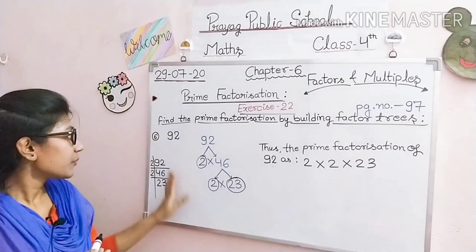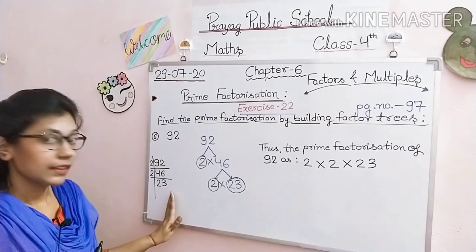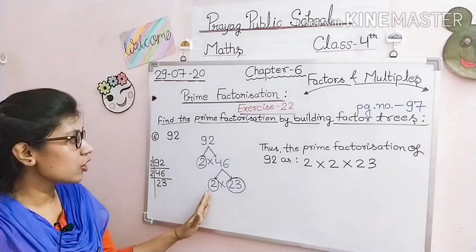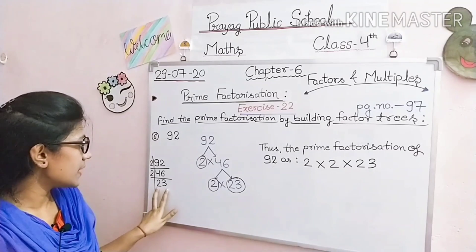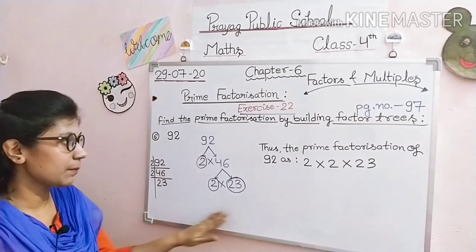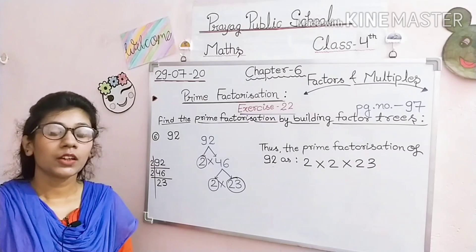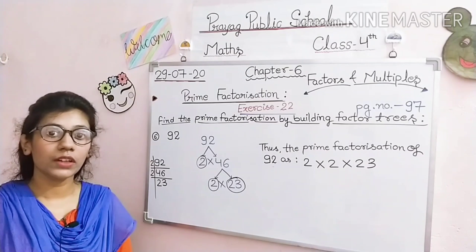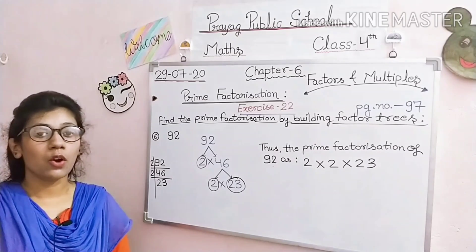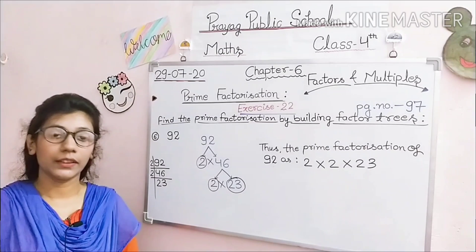आपको carefully दिये हुए number को division method से solve करना है ताकि आप factor tree method को carefully लिख और solve कर सको। जब भी last में prime number मिल जाए, वहीं process stop कर देंगे। So that's all for today. Do the given sums in your homework register and classwork in your classwork copy. On next turn we start some new topic. Thank you.